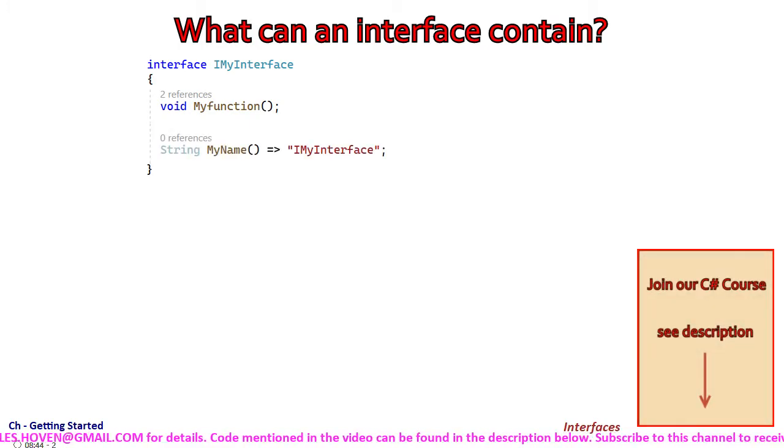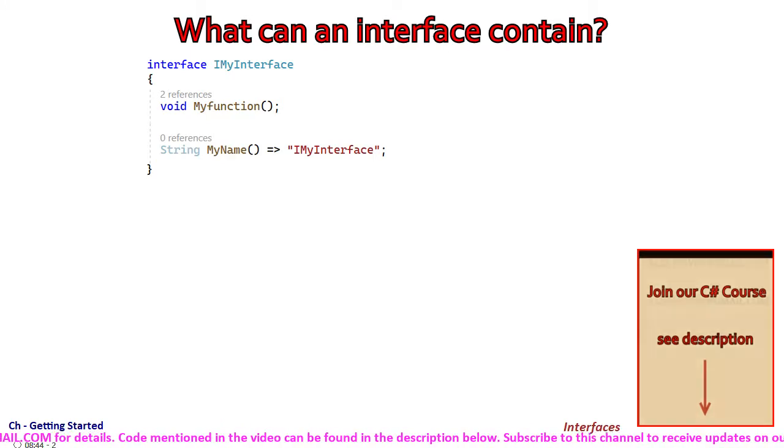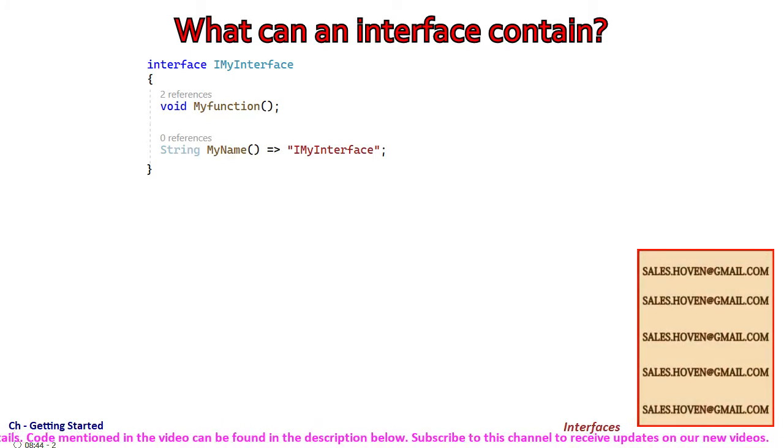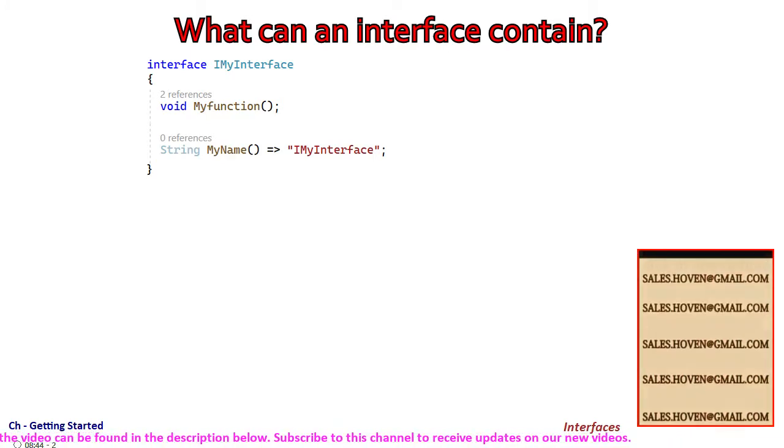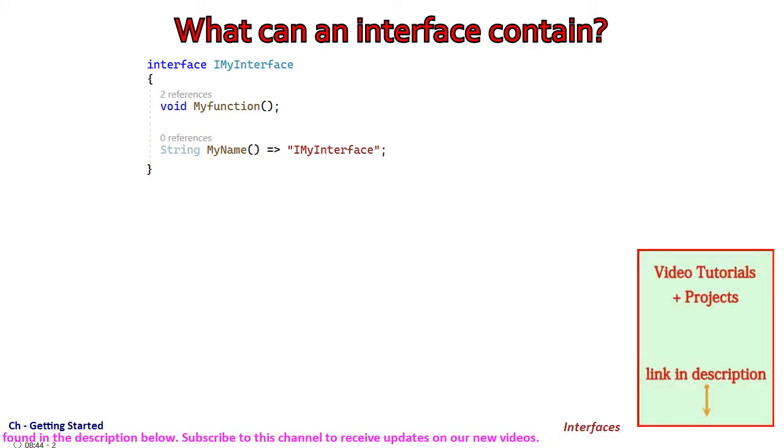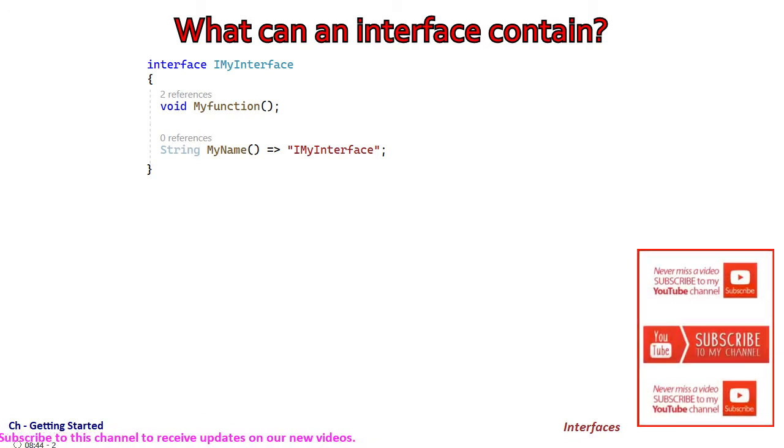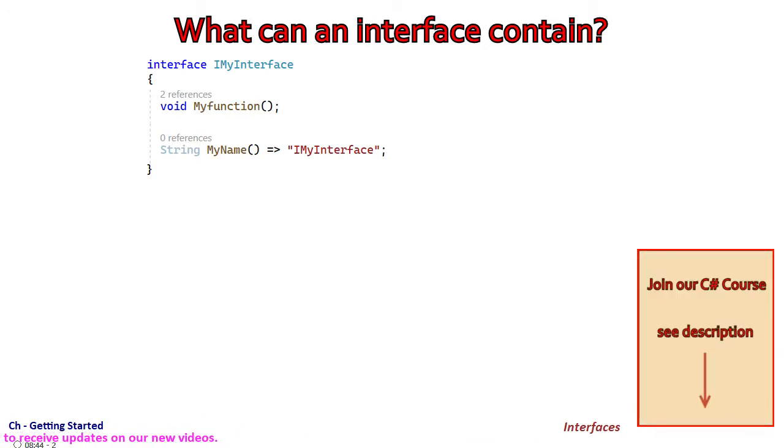An interface can provide a default implementation of a function. For example, we have a function called myName that returns a string iMyInterface. The implementation is now optional because a default body has been provided.